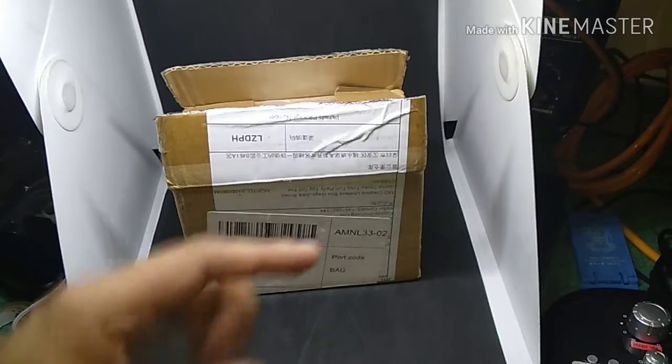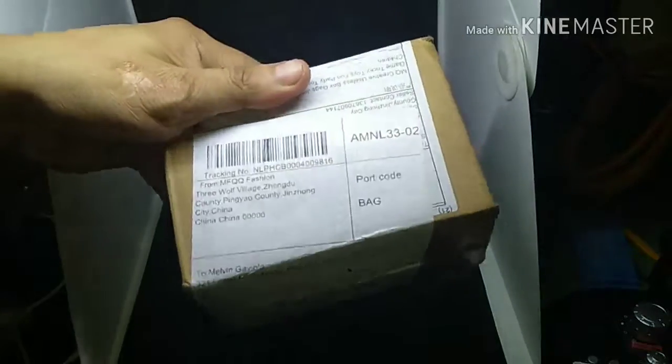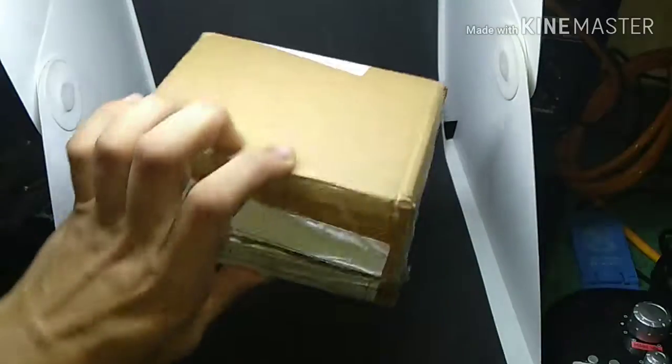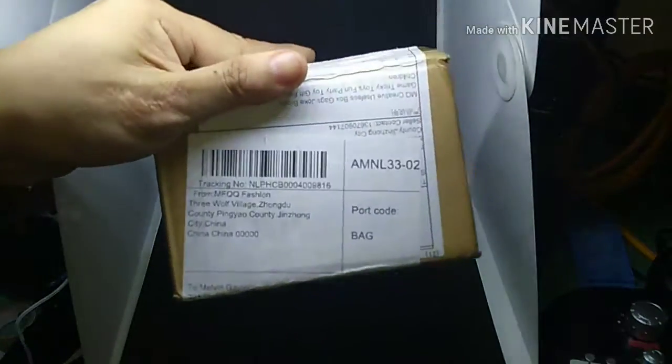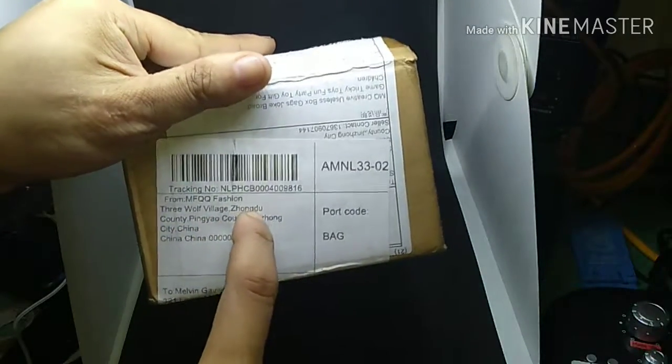Yo what's up, it's your boy Melvin. Today we have an item in front of you that just came in. It's in a small box, how cute is the box? It came from Sanrio Village, Chengdu actually. You know what this is because it's going to be on the thumbnail for this video.